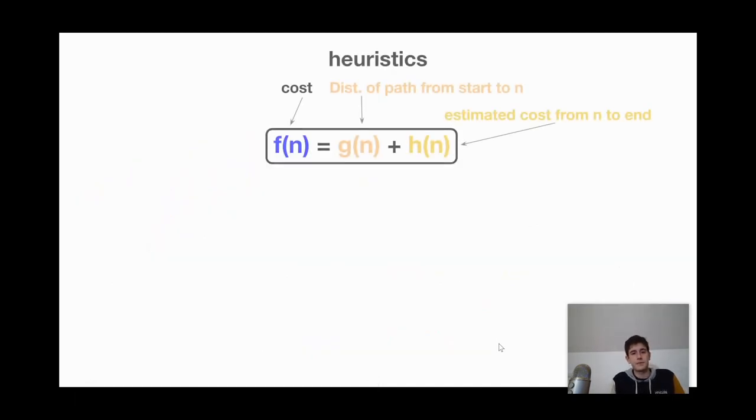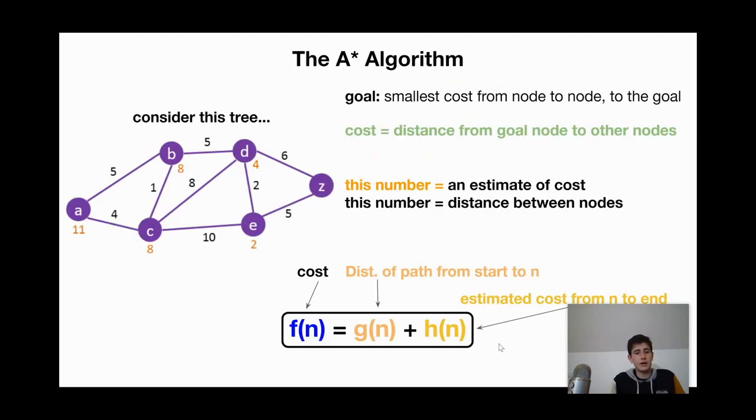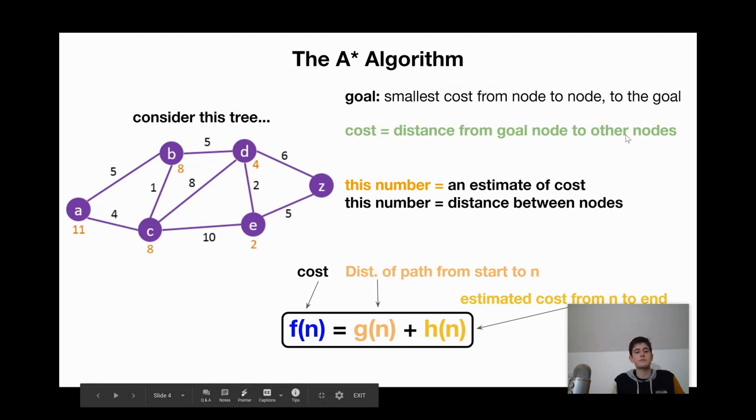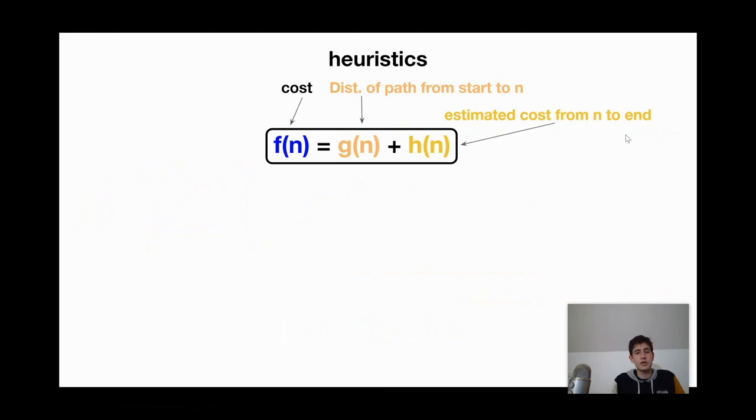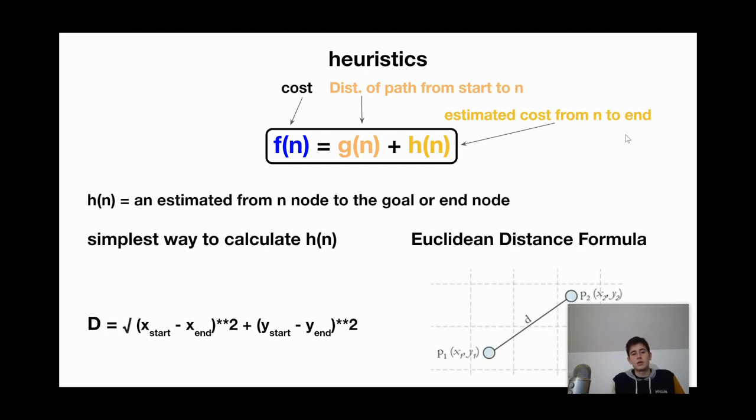Okay. So we're talking about heuristics and estimating cost. Let's recall that cost is the distance from goal node to the other nodes. Now let's recall our equation. Cost equals distance of path from the start to nth node to an estimated cost, and H of N is estimated cost from the nth node to the end.